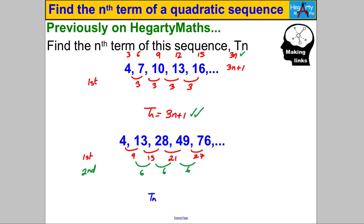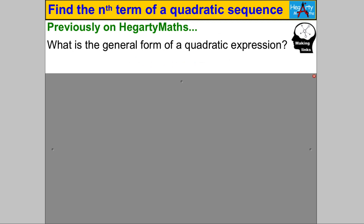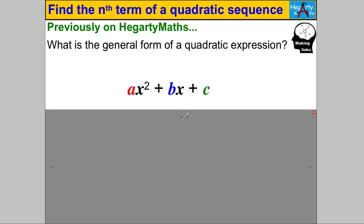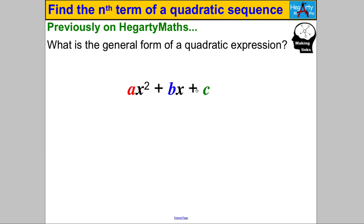That's going to be the key in order to find a formula for the nth term of a quadratic sequence. One more thing to think about before I show you what the nth term is: if I asked you what the general form of a quadratic expression is, well usually we've thought of it as something like ax² + bx + c. But if we're dealing with the nth term of a quadratic sequence, it's going to be in terms of n, so we're looking for something of the form an² + bn + c.